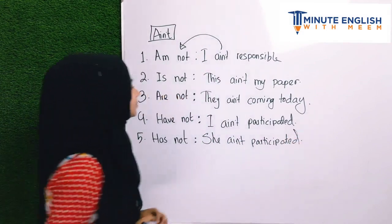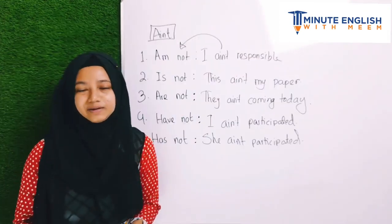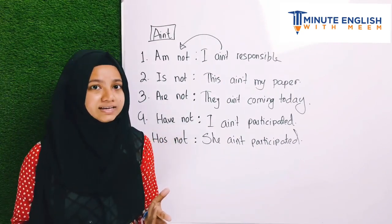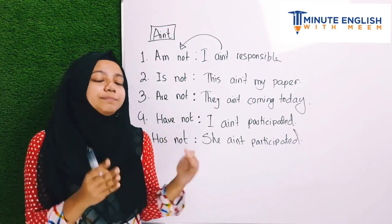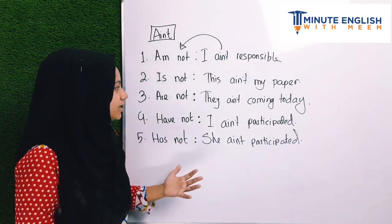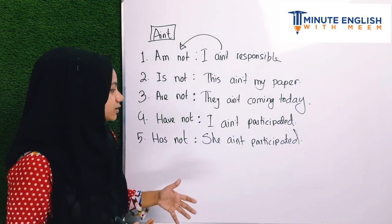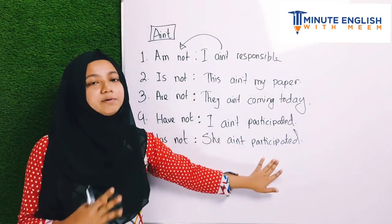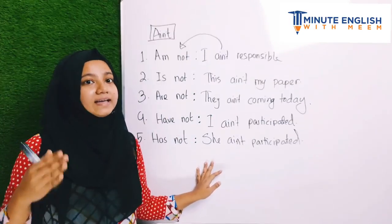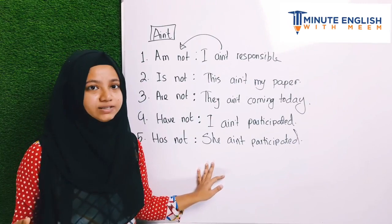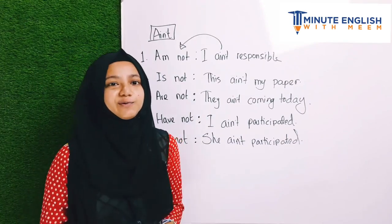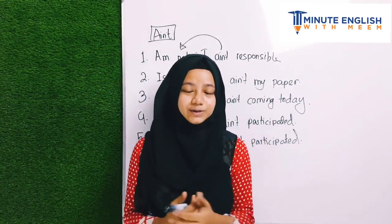So to recap, 'ain't' replaces: am not, is not, are not, have not, and has not. Examples: 'I ain't responsible,' 'this ain't my paper,' 'they ain't coming today,' 'I ain't participated,' 'she ain't participated.' Remember, there is no alternative to practicing speaking.